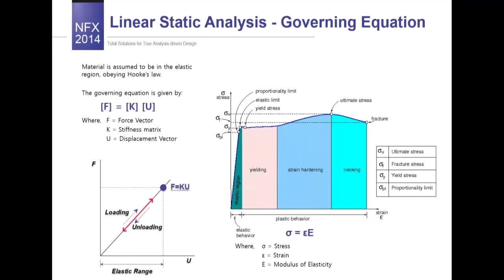Material data used in linear static analysis is assumed to be in the linear elastic region. On the stress-strain curve we can recognize two regions — elastic and plastic — where plastic is subdivided into yielding, strain hardening, and necking. The relationship describing the elastic region is: sigma equals epsilon multiplied by Young's modulus, where Young's modulus is defined as the slope of the line in the elastic range. The governing equation is the force vector equals the stiffness matrix multiplied by the displacement vector, which the solver uses to calculate deflections and then convert them to stress.